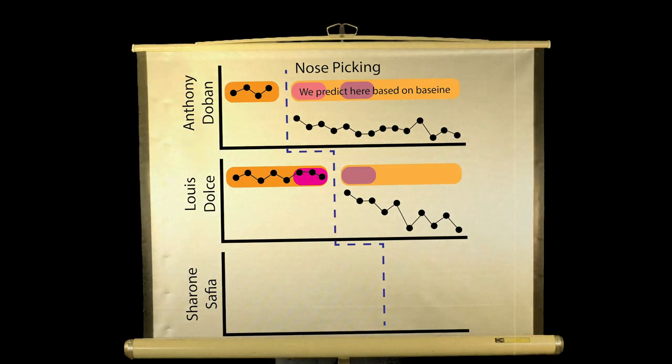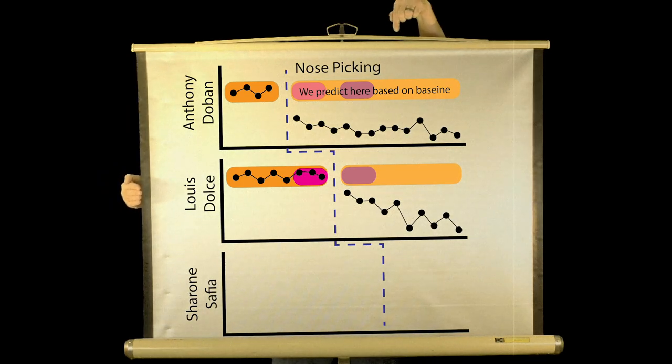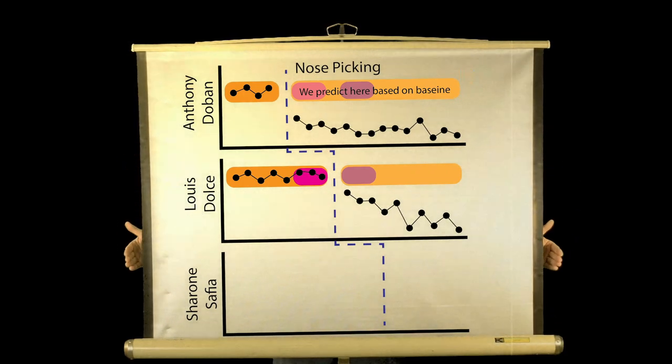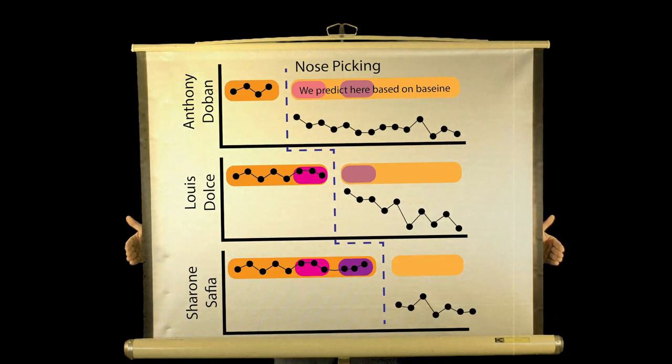We are now establishing, again, more prediction and verification. We predicted that the intervention would work. We have our baseline, and we predict that our intervention is going to have an effect on behavior. As you can see in the data, it had the effect for this person, then it had the effect for this person. So you see nose picking decreasing. Everything's working absolutely perfectly.